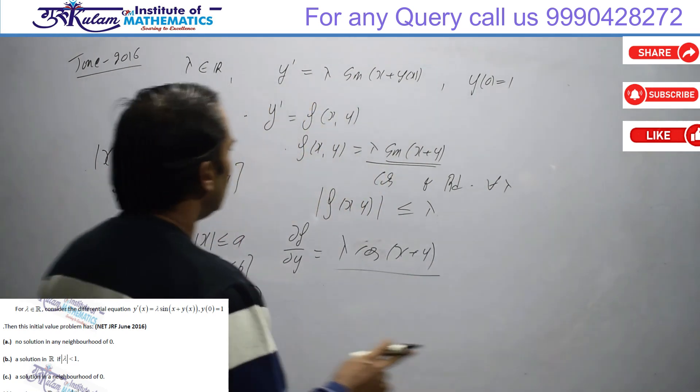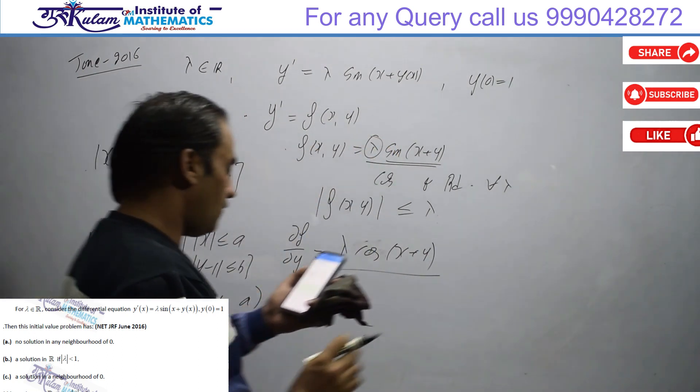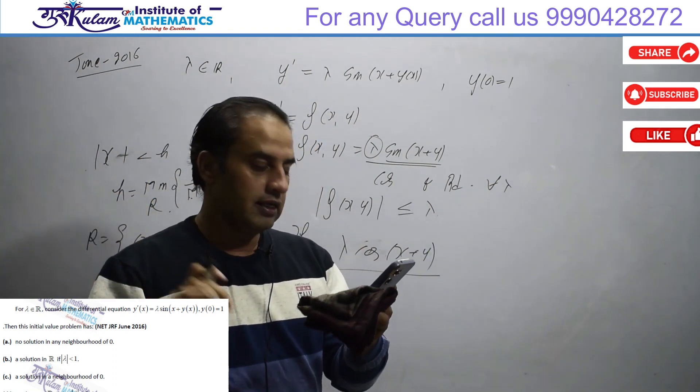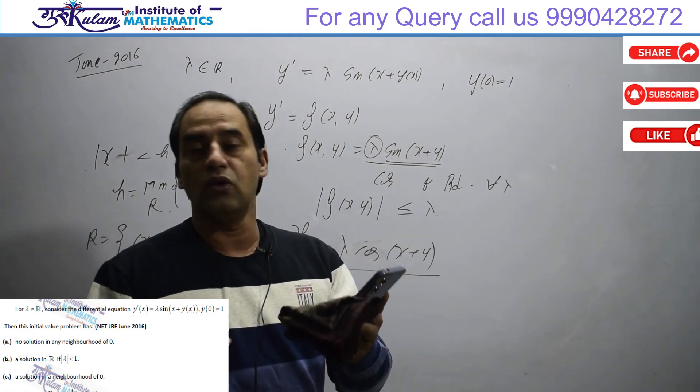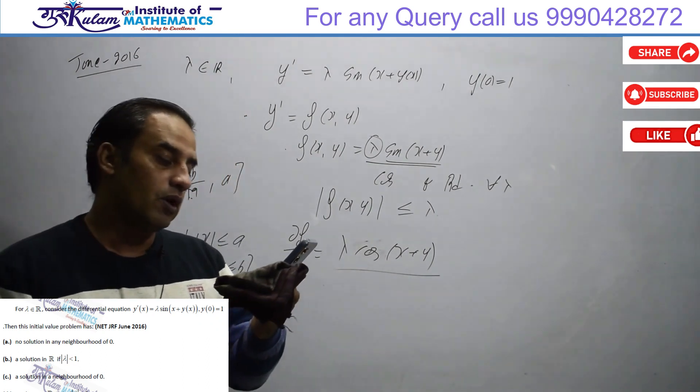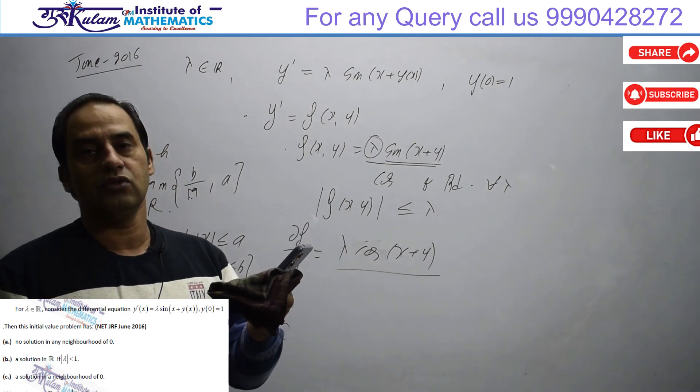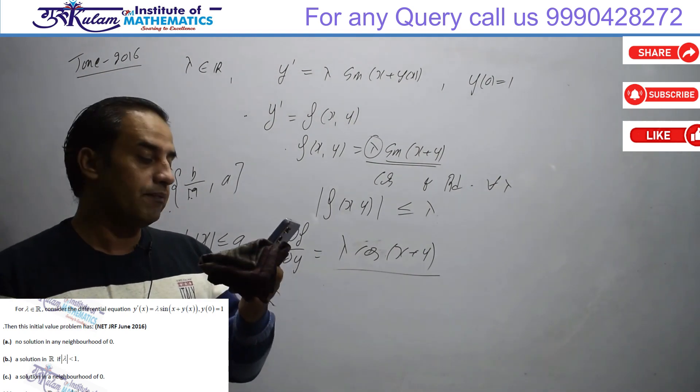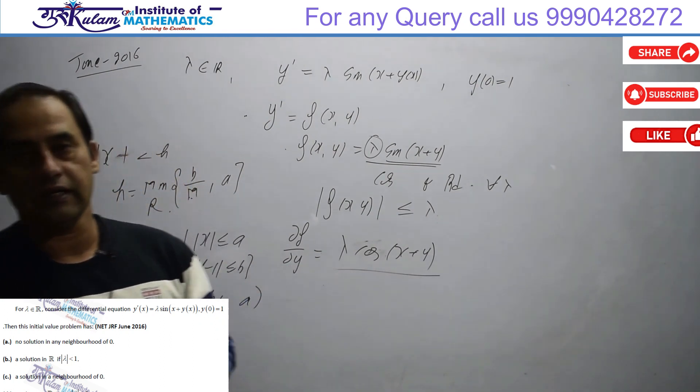For any lambda, unique solution exists. So first option 'no solution in any neighborhood of 0' is false. Second option 'has a solution in R if |lambda| < 1' - true for all lambda, so true for |lambda| < 1. Third option 'a solution in a neighborhood of 0' is true. Fourth option 'a solution in R only if |lambda| > 1' is false. So answer is B and C.